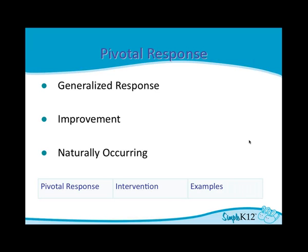Naturally occurring consequences means you want something to happen in the natural flow of the day. For instance, when I reward my kids we do things like: once math class is over, we can go outside. In my mind, that's because recess is right after math — but I tell the student 'once you finish your math sheet, we can go outside.' Maybe they finish early and you take them out a little early; that's an even more immediate response. As opposed to something like pulling them out for extra sensory time — if you give them something that can't happen on a regular basis, it doesn't stick as well.